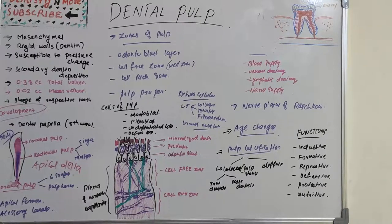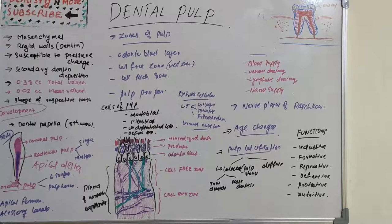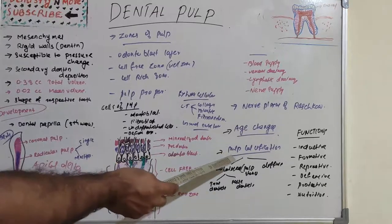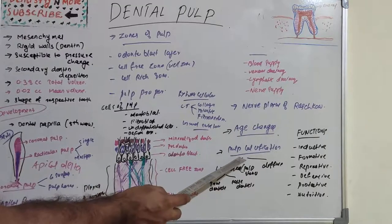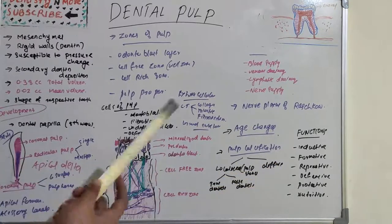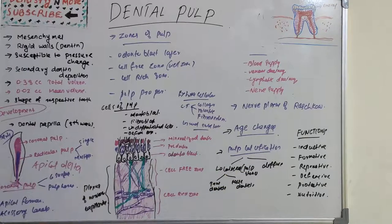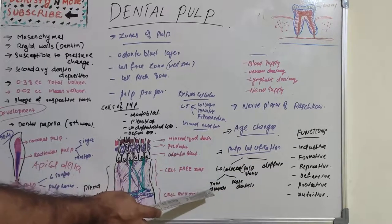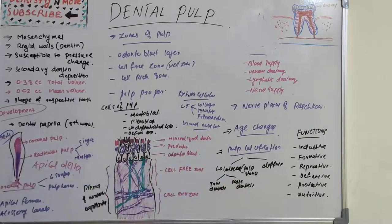With age, the size of the pulp, apical foramen, cellular elements, and blood vessels all decrease. An important age-related change is pulp calcification, which occurs in two types: localized calcification (pulp stones), which can be true denticles or false denticles, and diffuse calcification.